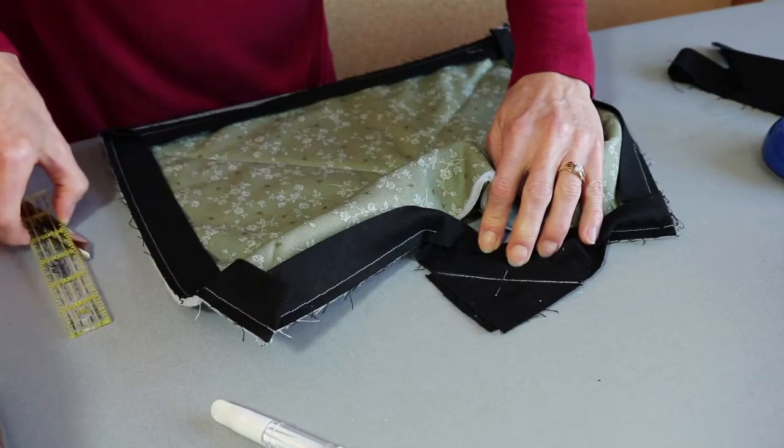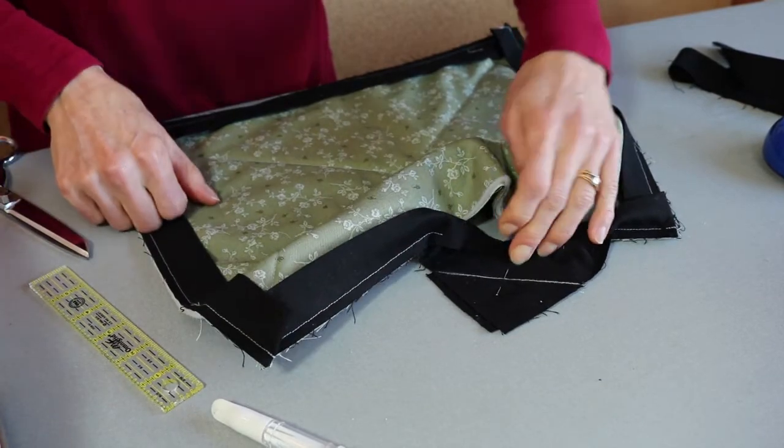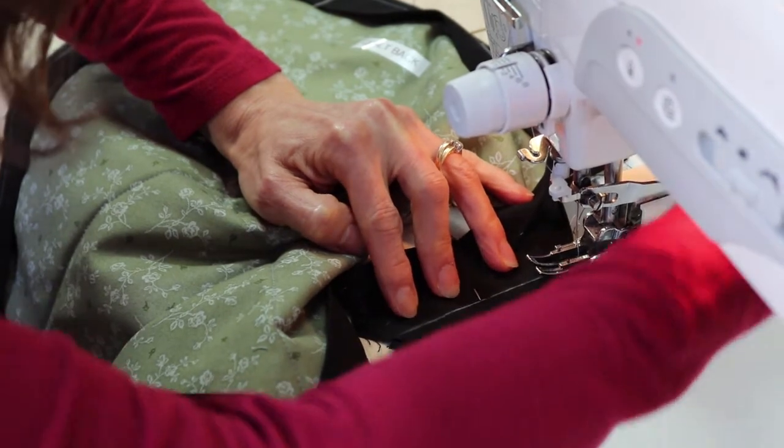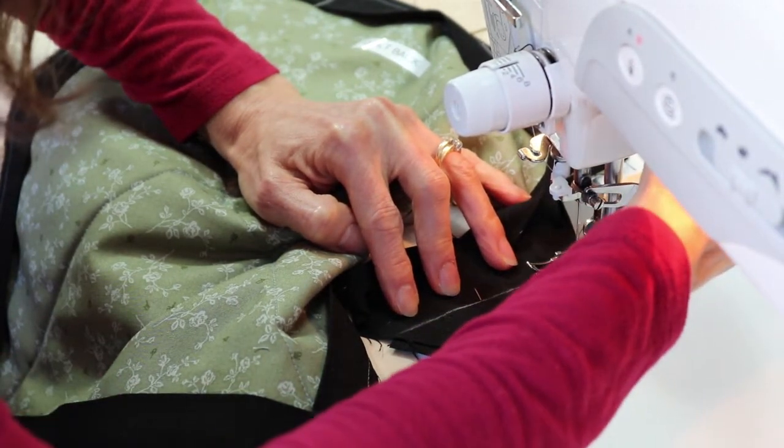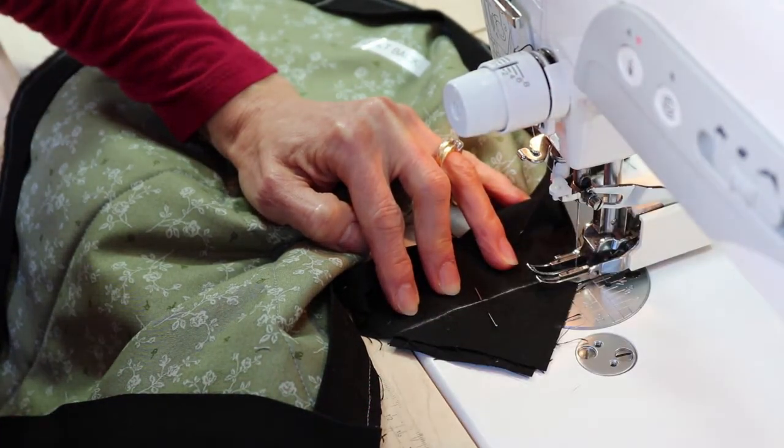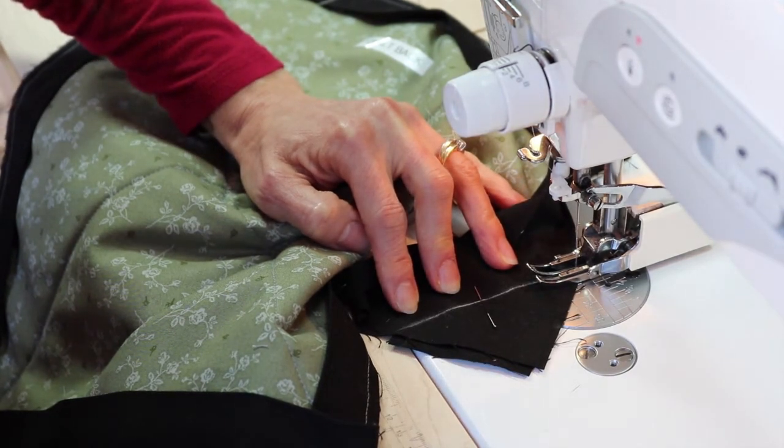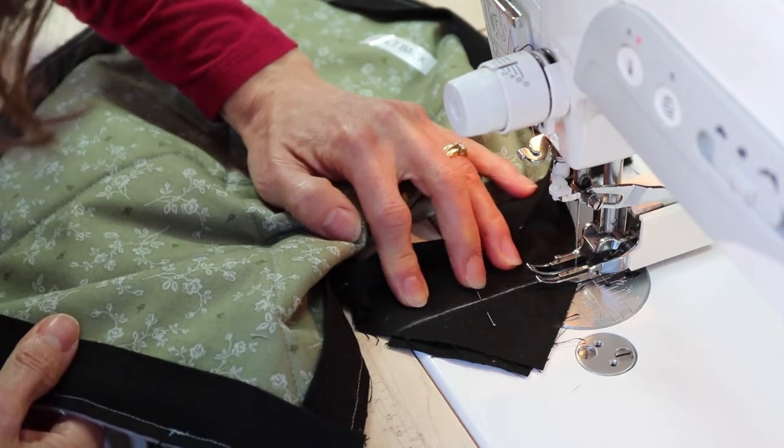And we're going to head back to the sewing machine. We're back at the sewing machine and we're going to reduce our stitch length down to about 1.9 nice and tiny this way the threads won't show through when you press the seam open.